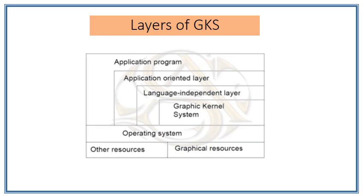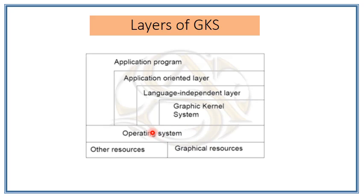The layers of the Graphic Kernel System include the operating system at the base. A computer will not function without an operating system. In the operating system, object images, text, and videos are seen with the help of graphical resources. Other resources include RAM, processor, webcam, speakers, etc.